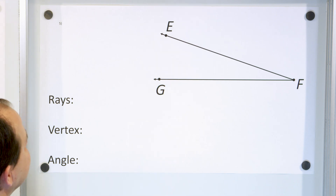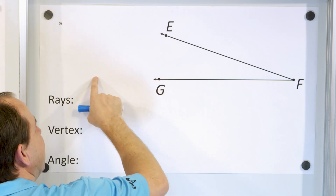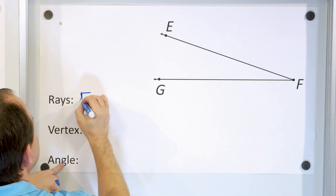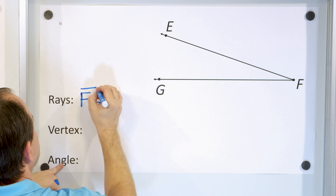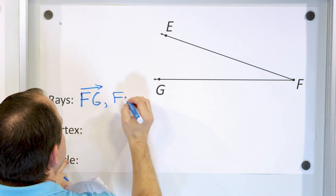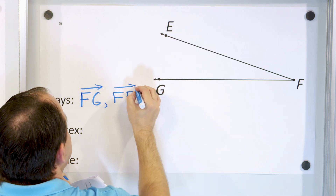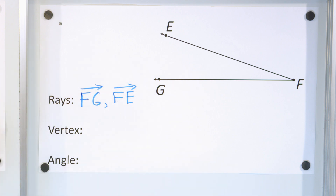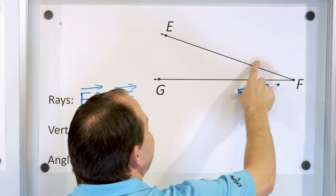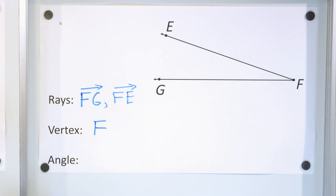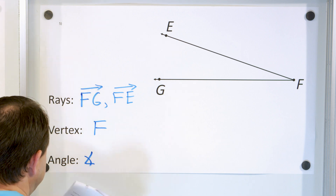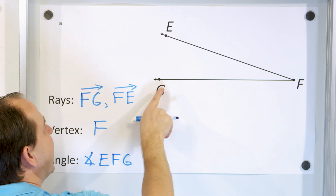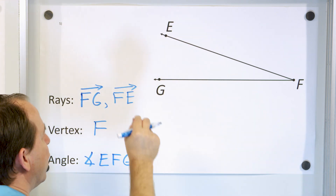Next problem: we have a nice angle formed at point F, with a ray going through G and a ray starting at F going through E. The two rays are ray FG and ray FE — for rays you cannot flip the order of the letters because they have a starting point at F. The vertex of this angle is point F. The angle is named angle EFG, or you can also name it angle GFE.